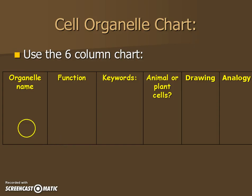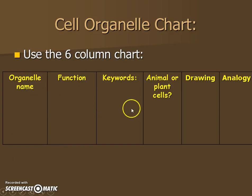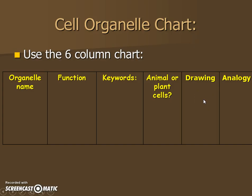As we go through each of the slides, you'll see a column for organelle, a column for function, a column for keywords, and a column for animal and plant cell. I'll do my best to try to give you hints for a drawing — just do your best on that. And then some of them are going to have an analogy. I'll tell you if it does; if it doesn't, you could just put a line through that box.